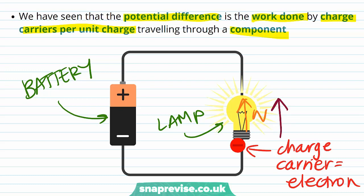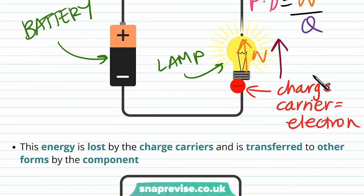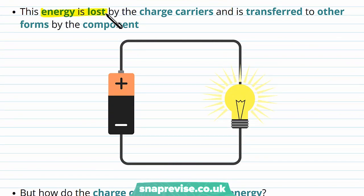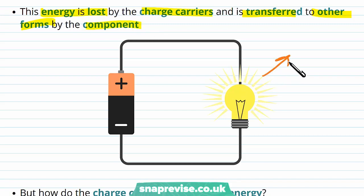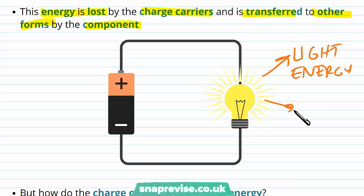We call the potential difference, which is PD, the work done per unit charge — so it's the work done per charge that actually passes through the component. This energy is lost by the charge carriers and is transferred to other forms by the component. For example, a light bulb will transfer some of this energy to light energy, and also some of the energy is going to be wasted into heat energy.